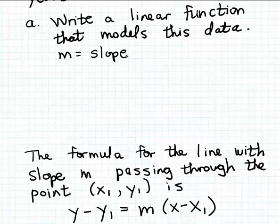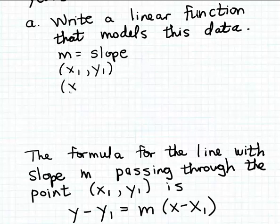We also need the coordinates for a point on the line. To calculate the slope, we actually need the coordinates for two points on the line. In the point-slope formula we only need one point, but to calculate the slope we need two. So let's write down two points on the graph of this linear function, calling them (x₁, y₁) and (x₂, y₂).